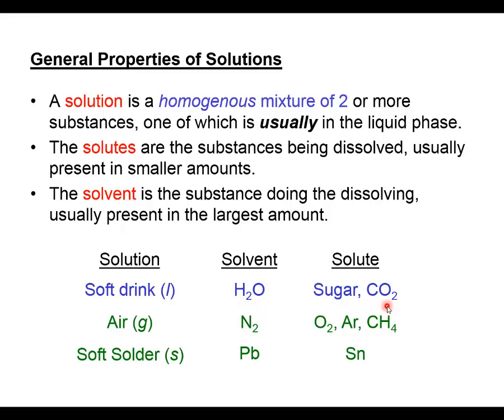We can also have other homogeneous mixtures that are solutions. We can define the air around us as fairly uniform — in the top corners of a classroom the mixture of gases is fairly uniform, so air in the gas state can also be defined as a solution. The major component in air, about 78%, is nitrogen gas, which we can define as the solvent. The solutes would be all other gases present in smaller quantities: oxygen gas, argon, other noble gases, methane, carbon dioxide, water vapor, and any pollutants. That's an example of a gas-based solution.